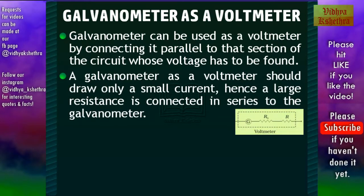That is, a high resistance has to be connected in series with the galvanometer. This is done so that the current flowing through the parallel branch is kept to a very small value.